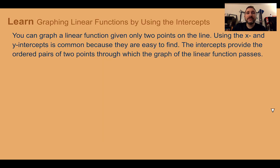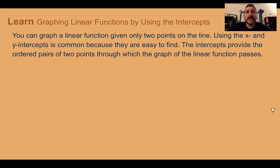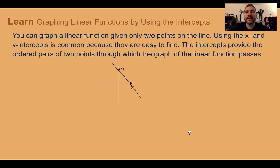Let's learn graphing linear functions by using the intercepts. You can graph any linear function given only two points on the line, and using the x and y intercepts is common because those two points are easy to find. The intercepts provide ordered pairs of two points through which the graph will pass. Your y intercept is where the graph crosses the y-axis and your x intercept is where it crosses the x-axis. If we can find those two points, we can connect them to make our line.